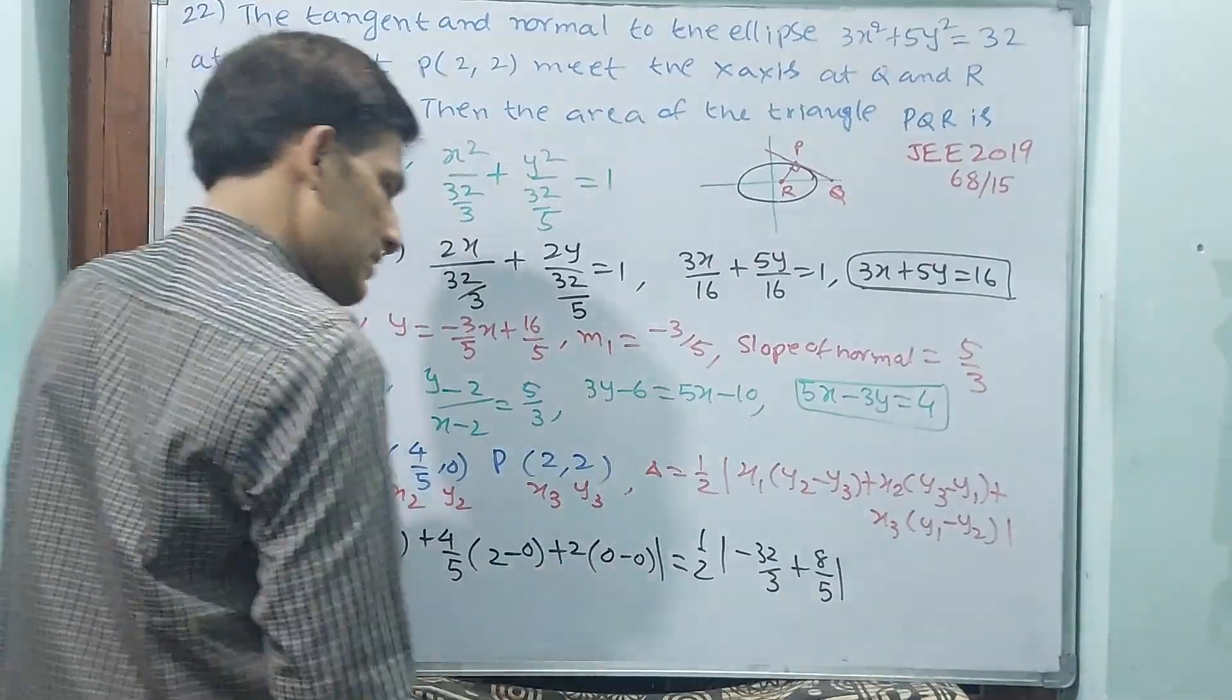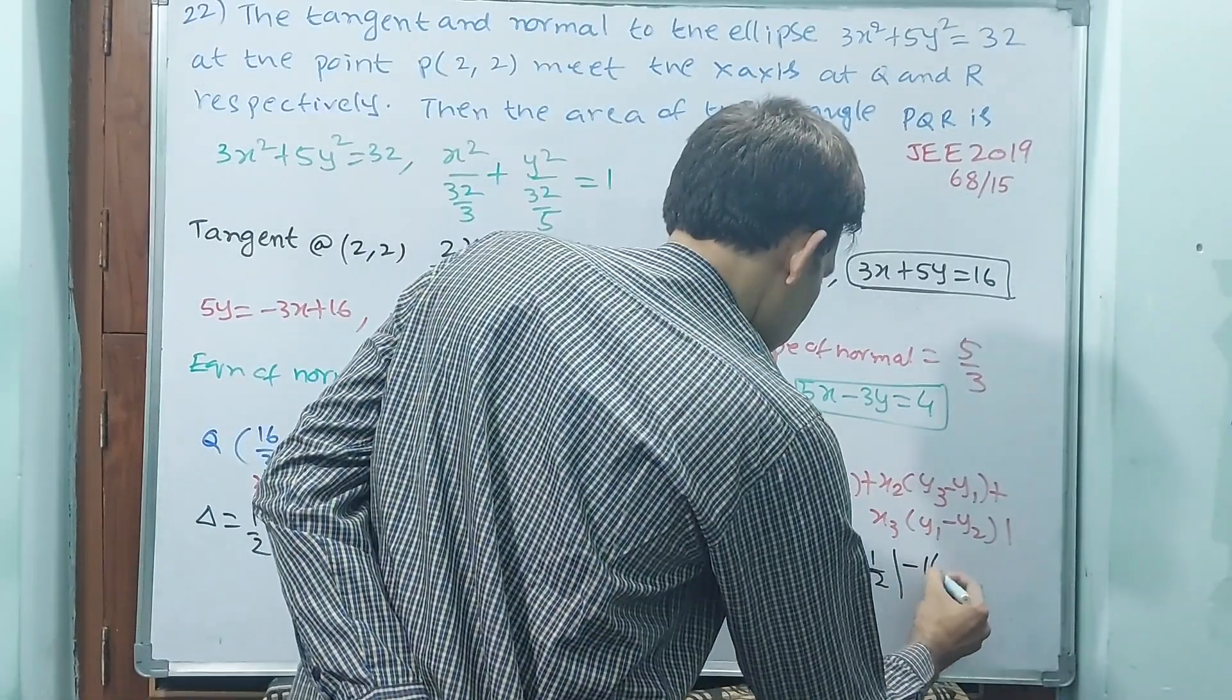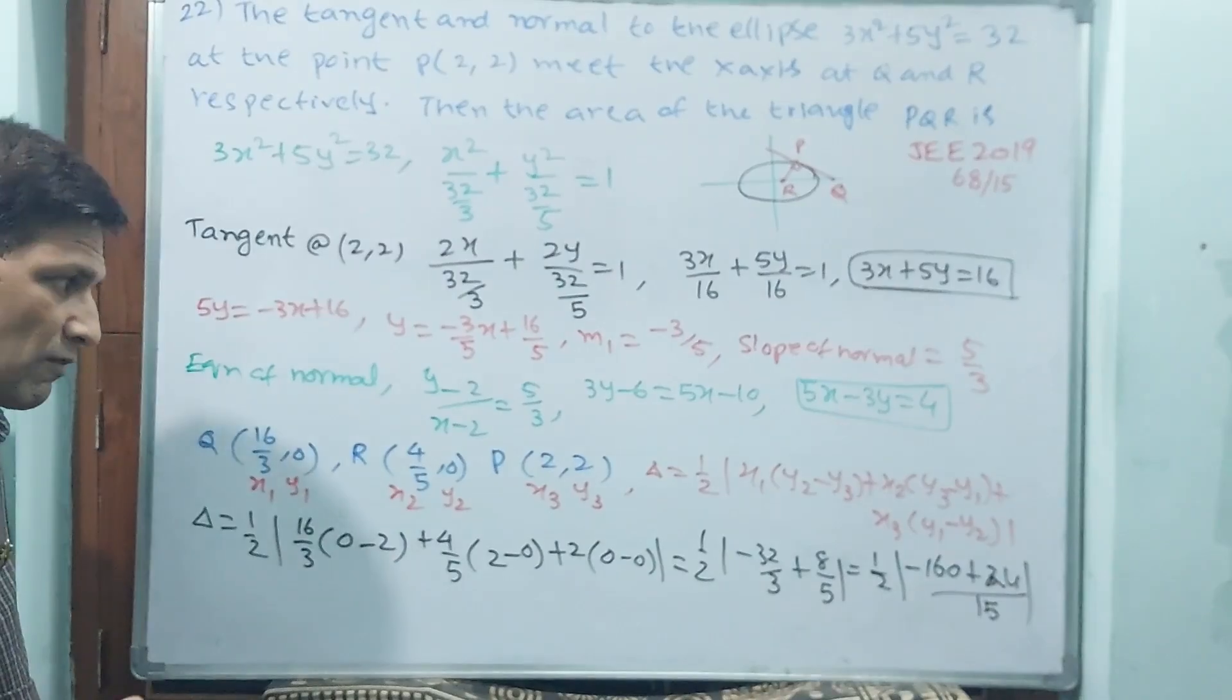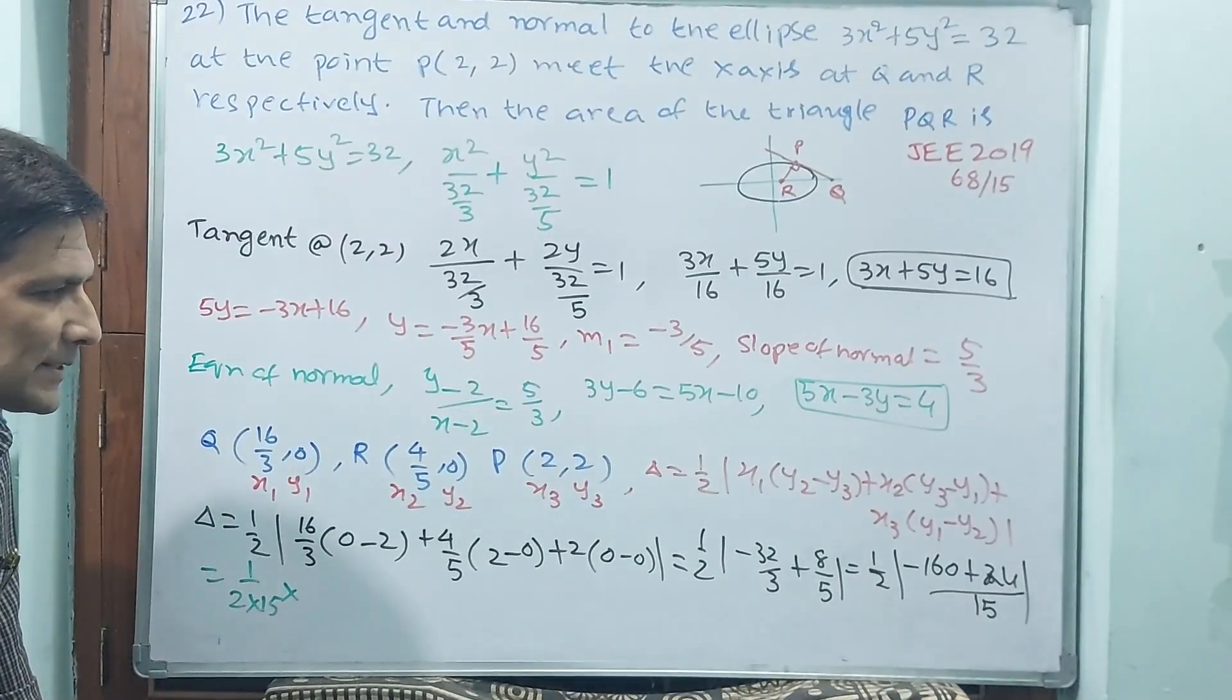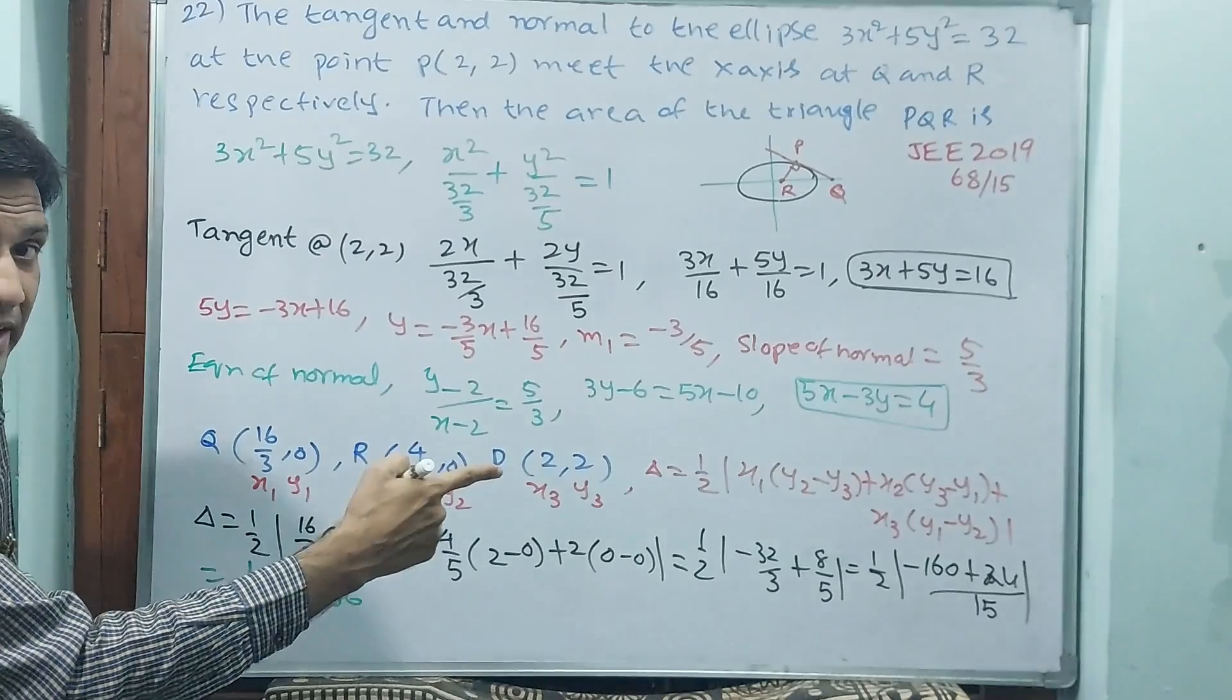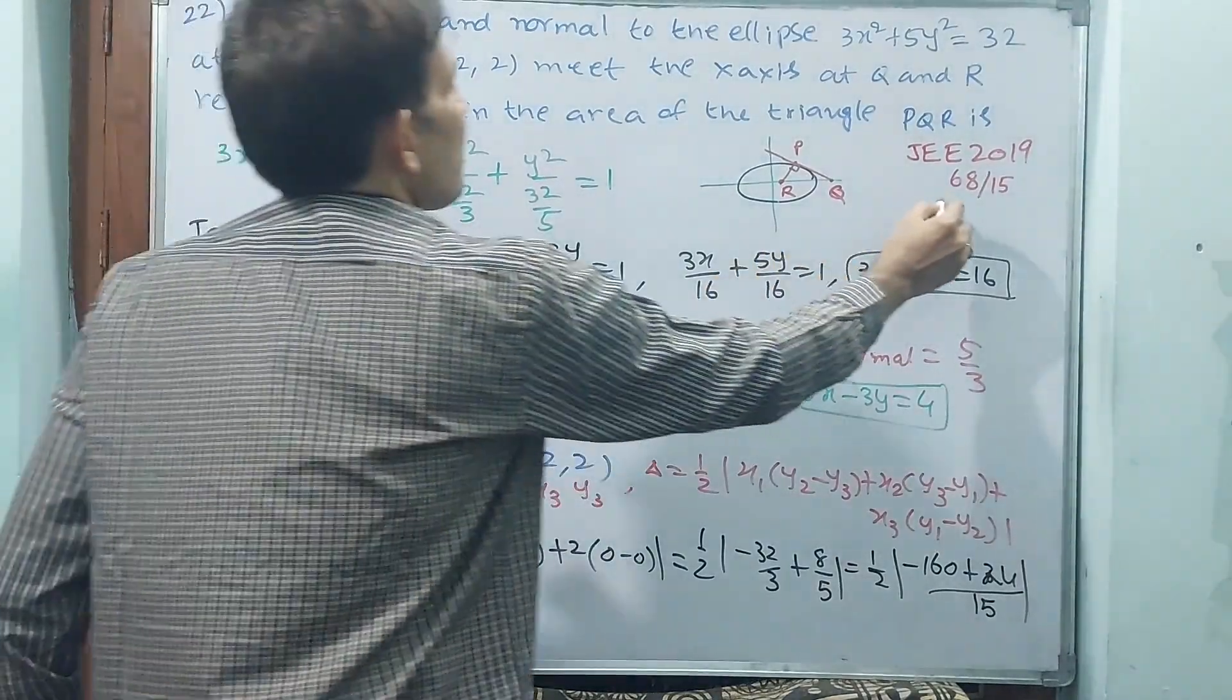This is 0. Half into modulus of, 32/5 minus, 5 times, 5 3s are 15, 5 16s are 160, 160 plus 3 8s are 24, by 15, modulus. You subtract 24 from 160 and put modulus. 1/30 I can take common, 1/2 into 16 I can take common into 136. 136 means 16, 2 how many times it goes? 2 6s are 12, 2 8s are 16 by 15. 2 will not be there, 68 by 15. 68 by 15 will be your answer.